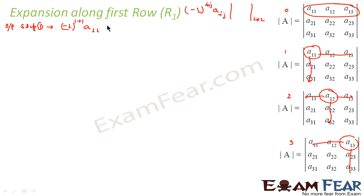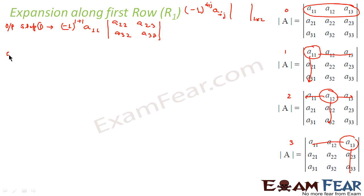So the output of Step 1 is: minus one to the power one plus one into a11, multiplied by the 2×2 matrix remaining after crossing out row 1 and column 1, which contains a22, a23, a32, and a33.